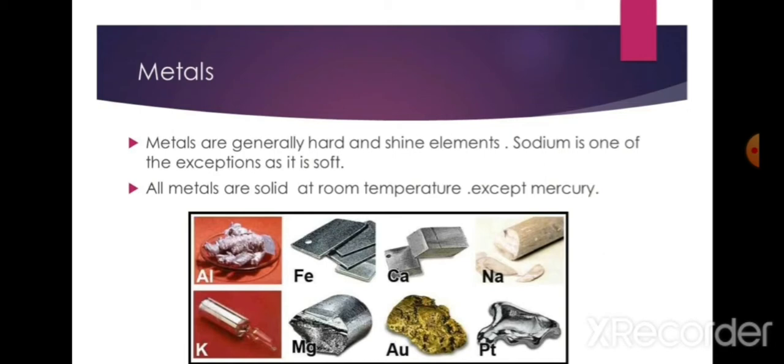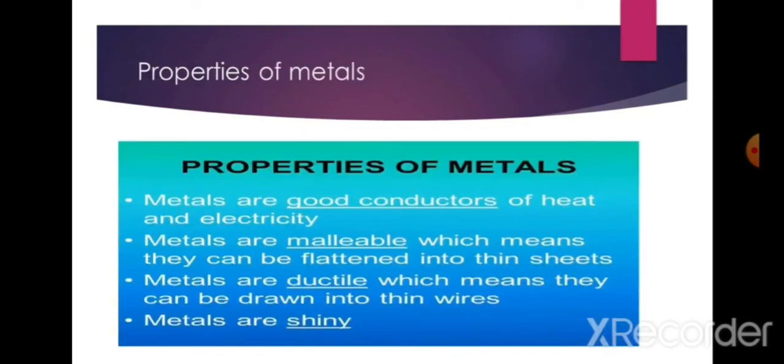Properties of metals: metals are good conductors of heat and electricity. Metals are malleable, which means they can be flattened into thin sheets. Metals are ductile, which means they can be drawn into thin wires. Metals are shiny.